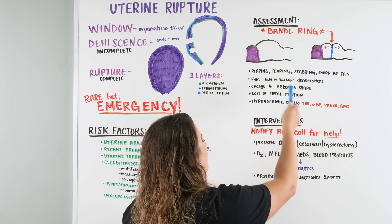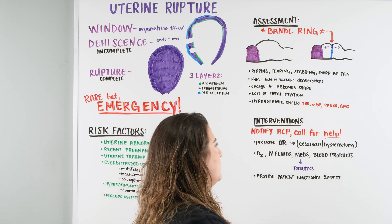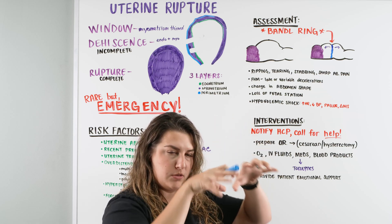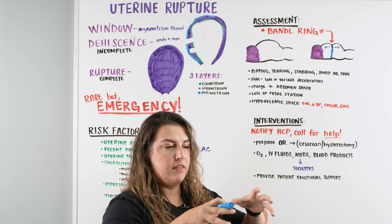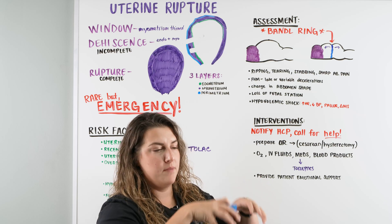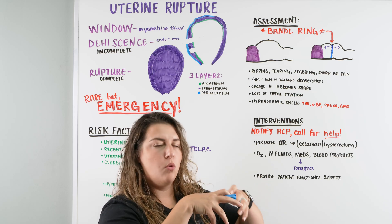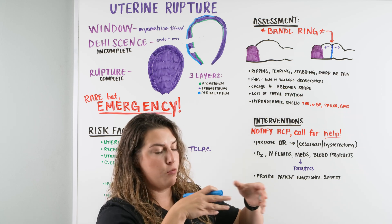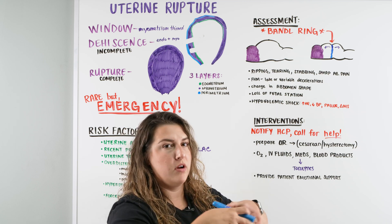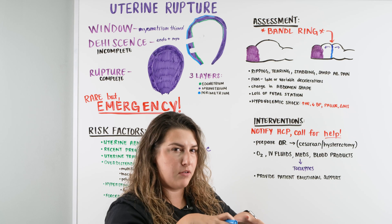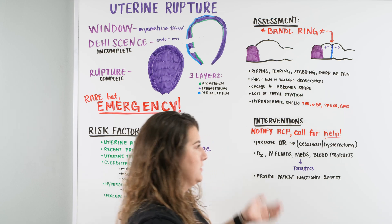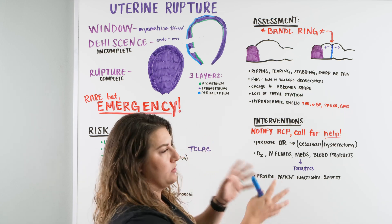There may be that change in abdominal shape from the Bandl ring. There might also be loss of fetal station — when contractions push baby down into the pelvic inlet, we get stations. But when the uterus isn't contracting correctly or is being torn apart and there's an opening, baby is no longer being pushed down into the pelvis. Instead, baby has a spot to go somewhere else, so we lose that fetal engagement and see a loss of fetal station.